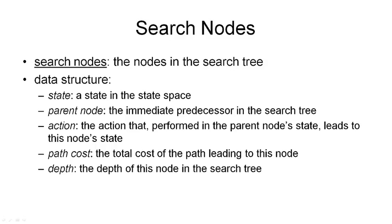Now that we have seen what search problems look like, we can turn towards search algorithms. But before we describe the algorithm, I need to describe the data structure that we manipulate during the search. This is called a search node. A search node is a bookkeeping structure that encapsulates a state. Note that we will be using the search graph as a search tree, simply to make the algorithm slightly easier to explain, but there is a simple extension that turns this back into a graph search algorithm.